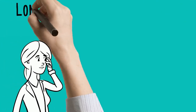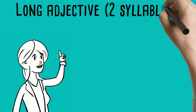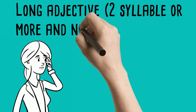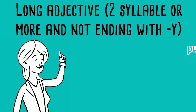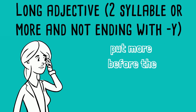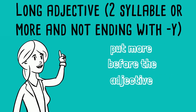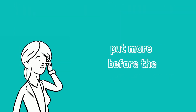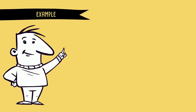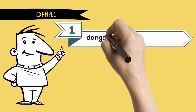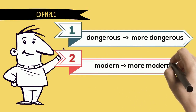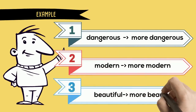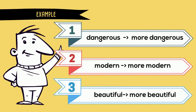Rule number five: for long adjectives with two syllables or more and not ending with 'y', we put 'more' before the adjective. For example: dangerous → more dangerous, modern → more modern, beautiful → more beautiful.